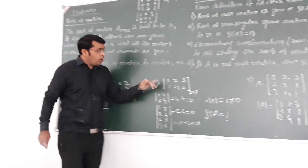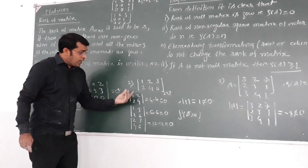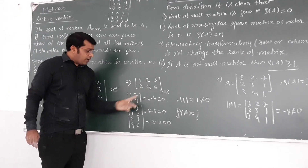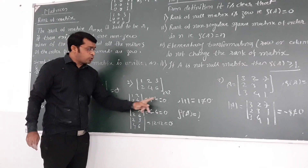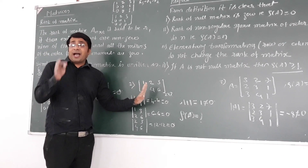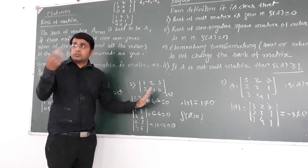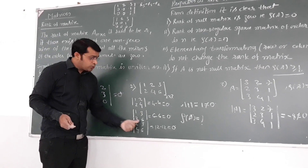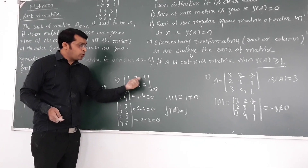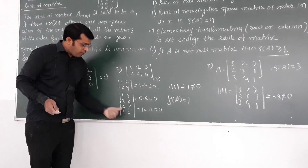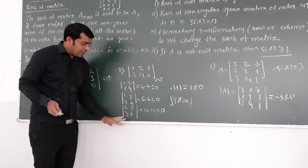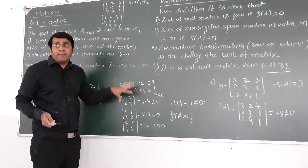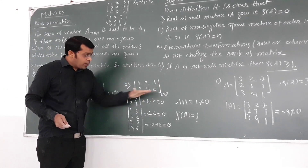Next example: we have a matrix of order 2 by 3. The highest order minors are 2 by 2. I take the first possibility: cross multiplication gives 4 minus 4, which comes to be 0. The first minor is 0. I check the second possibility with elements 1, 2, 3, 6 — that is also 0. Third possibility using the second and third columns: 2, 3, 4, 6 — the minor for this is again 0. So all three possibilities for the 2 by 2 minor of this matrix are coming to be 0.